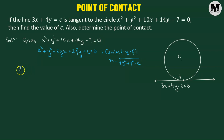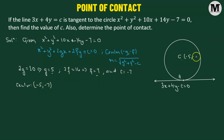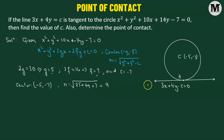We find 2g equals 10, so g equals 5; 2f equals 14, so f equals 7; and c equals negative 7. The center is therefore at (negative 5, negative 7). The radius equals the square root of 25 plus 49 plus 7, which gives the square root of 81, so the radius of the circle is 9.